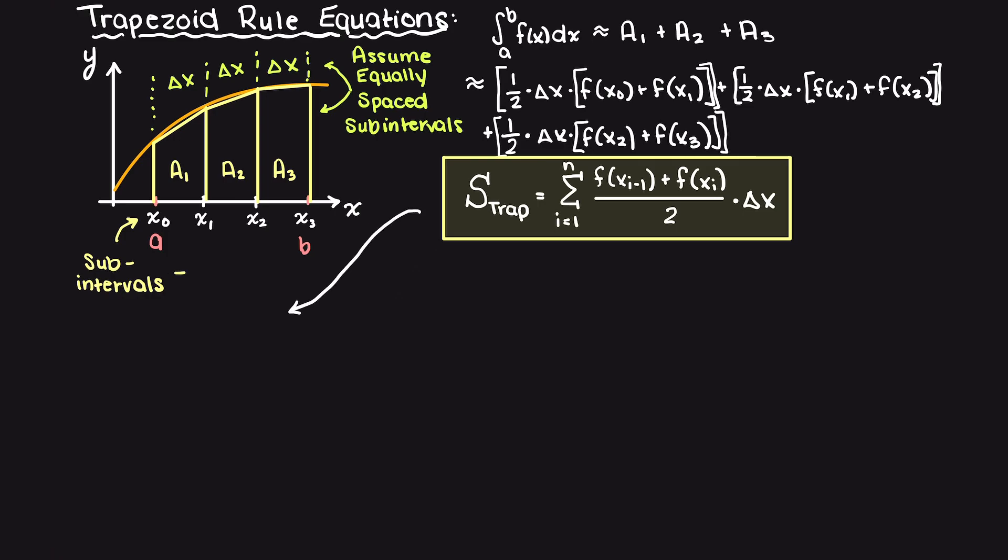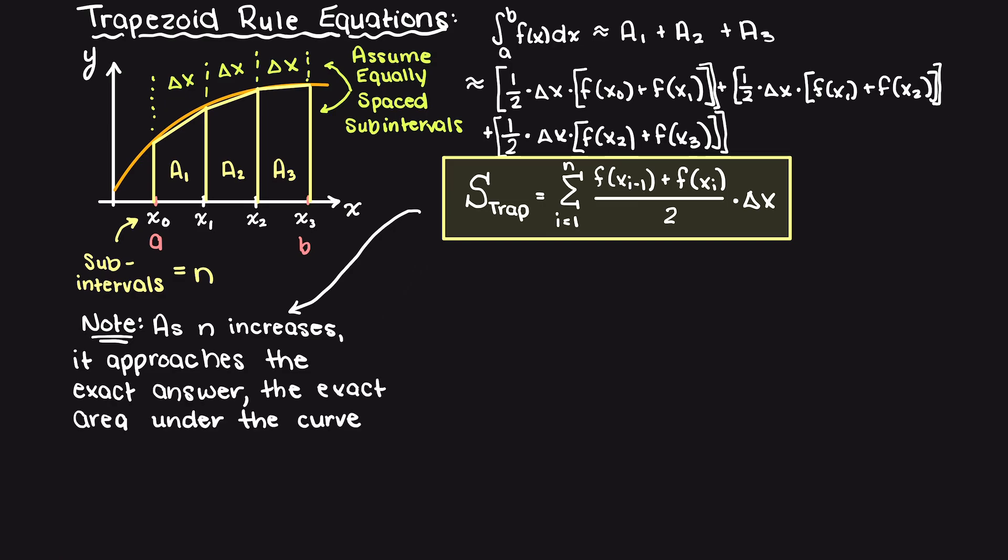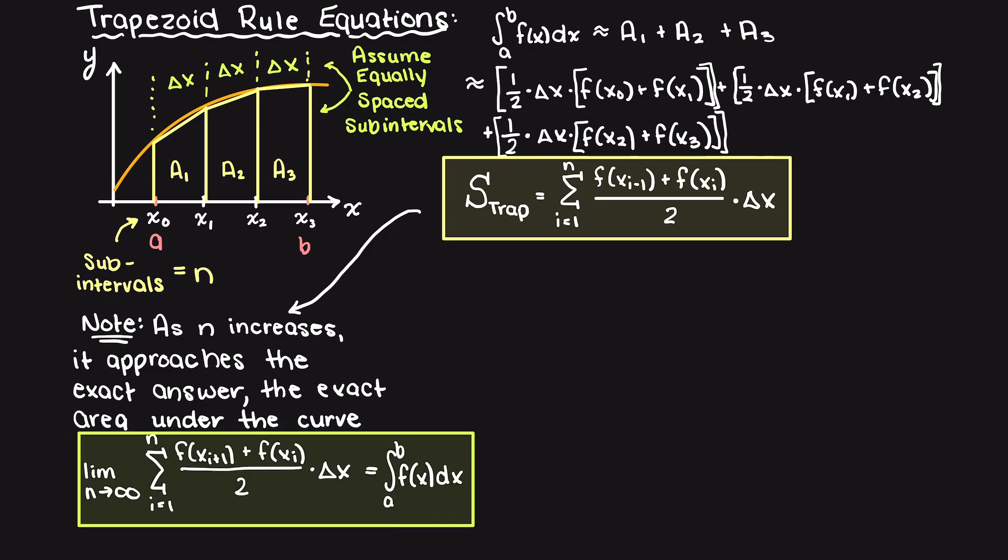Briefly, I just want to add that if we were to increase our number of subintervals, n, to a limit approaching infinity, we are going to approach a limit, that is the exact answer to the area under the curve. Recall the blue area from earlier. So, the more subintervals we have, the more accurate our answer will be using the trapezoid or any other numerical integration technique.